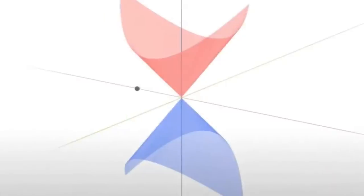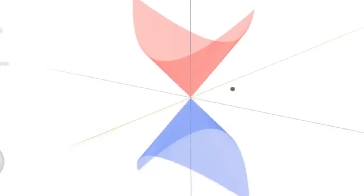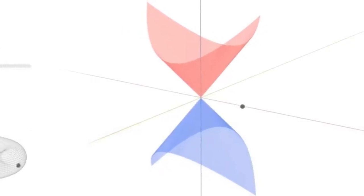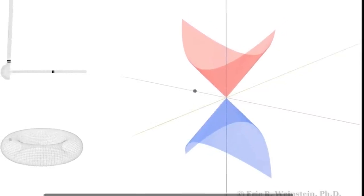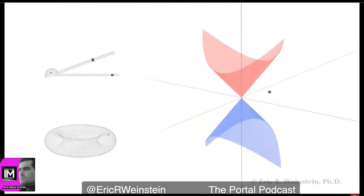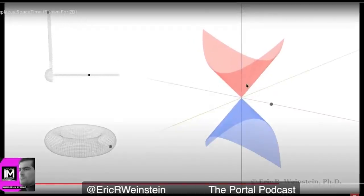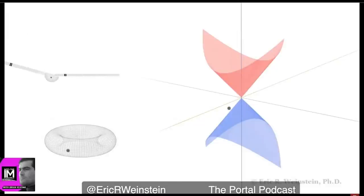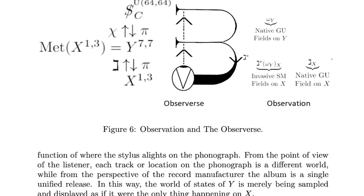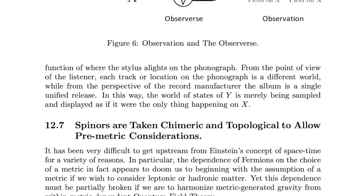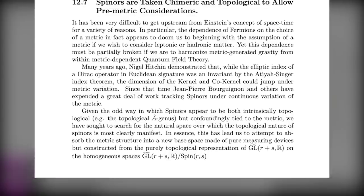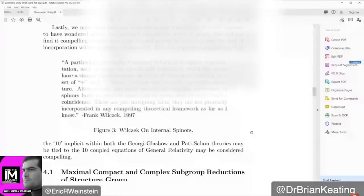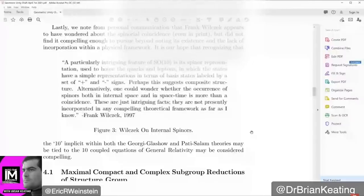The point is that spinners on 14 look like spinners on 4 tensors spinners on some version of 10. And whether you're talking about spin 10 models, SU 5 models, or SU 4 cross SU 2 cross SU 2, which is spin 6 cross spin 4, isn't that exactly what we see in the standard model? A particularly intriguing feature of SO 10, which is really spin 10, or could be spin 6 comma spin 4, is its spinner representation used to house the quarks and leptons in which the states have a simple representation in terms of basis states labeled by a set of plus and minus signs. Perhaps this suggests composite structure.